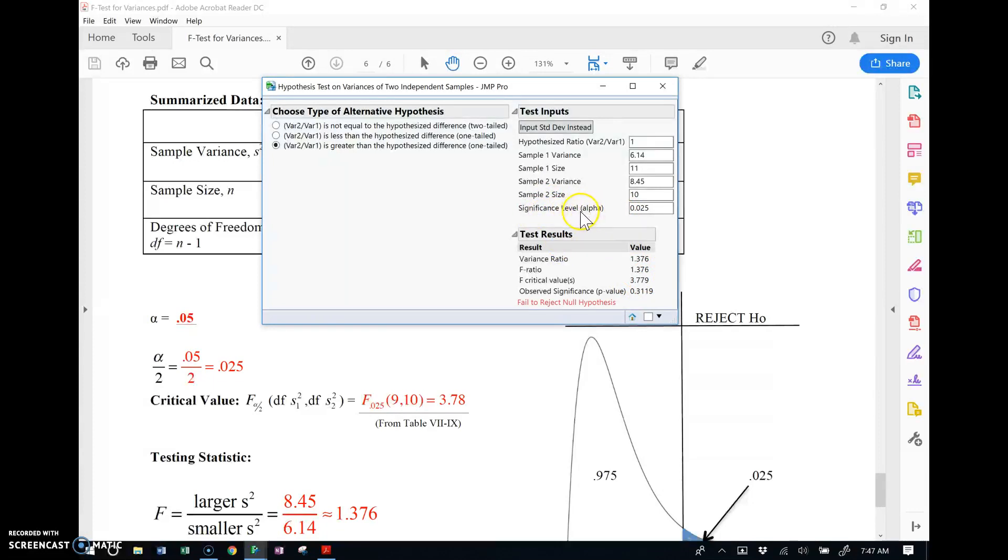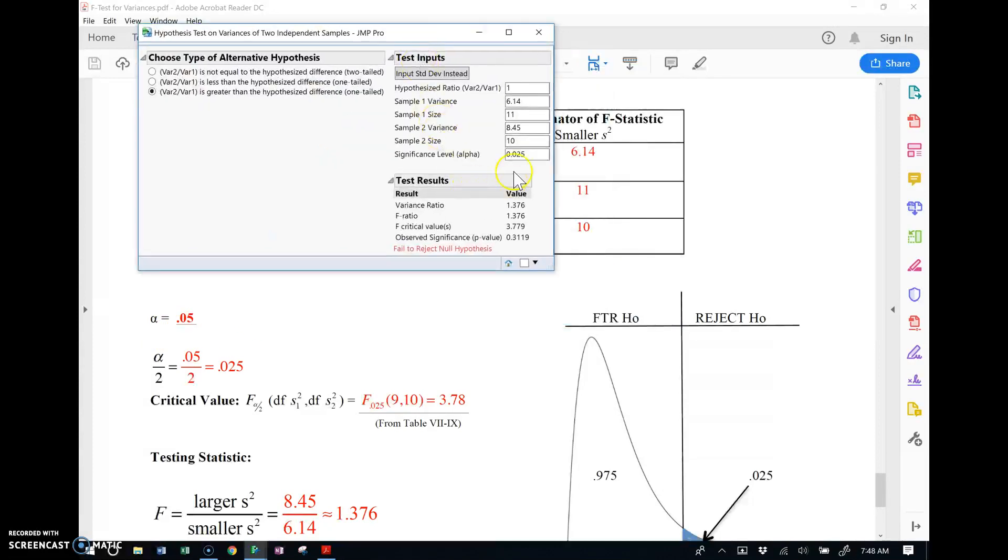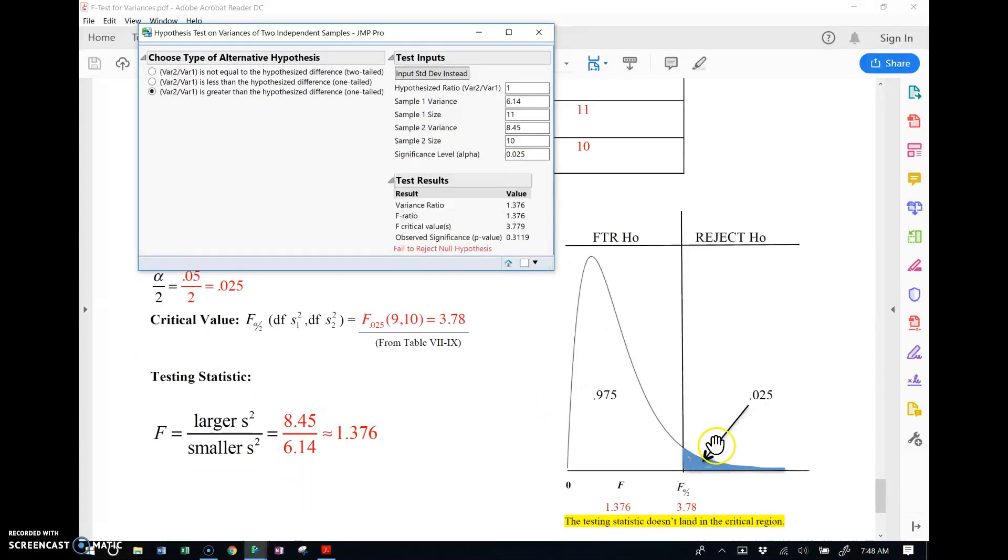The significance level alpha is here, right? That's significance. That's 0.05. That's what I put in there in the first place. But remember, we're always going to do a right tailed test, so that's why we divide the alpha by 2. And you can see I did that over here. Now JUMP actually requires that you give it the alpha over 2 value there. And then you see the F critical value, 3.779, 3.78 that I got from the table. And as you can see, they match.